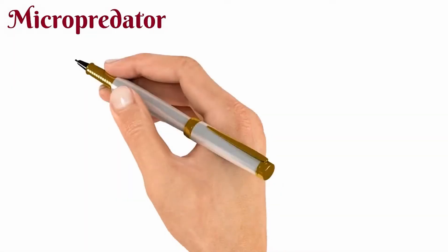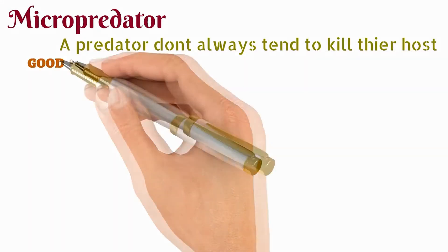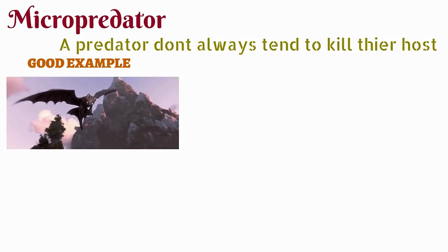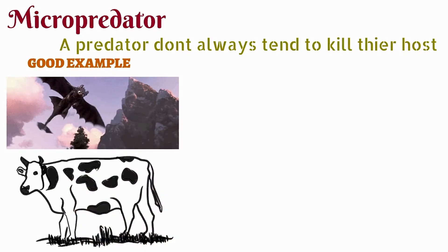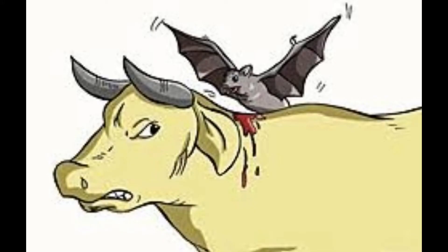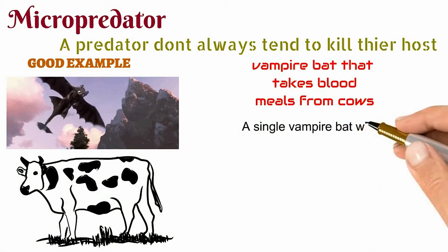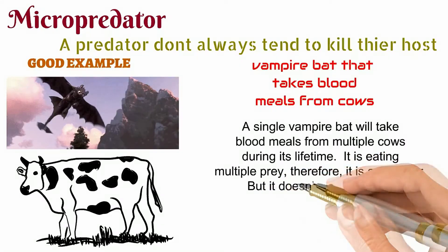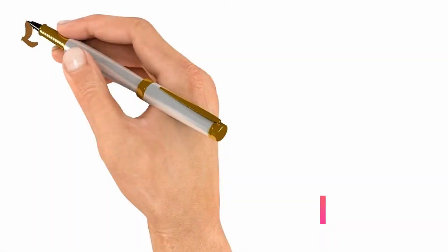Now we have the micro-predator. What is the difference between a micro-predator and a predator? There is no big difference, but a micro-predator does not always kill its host, unlike the predator which does kill. A good example is a vampire bat — if it takes blood from a cow, it is not killing the cow, so it is a micro-predator. A single vampire bat will take blood meals from multiple cows during its lifetime, so it does eat multiple prey like a predator, but it is smaller and does not kill, making it a micro-predator.